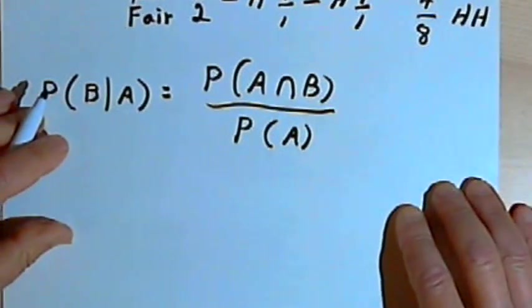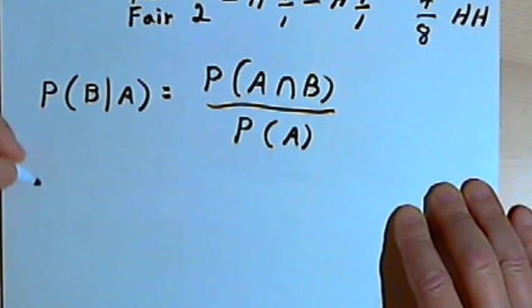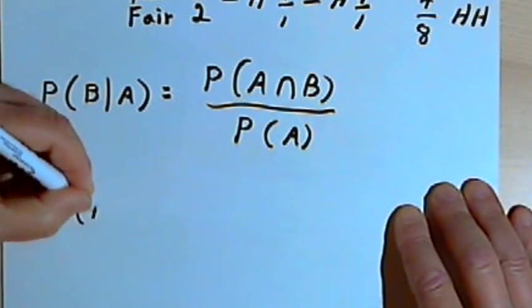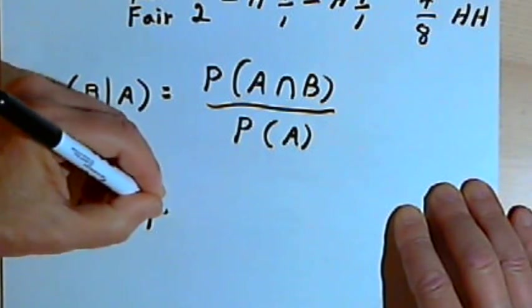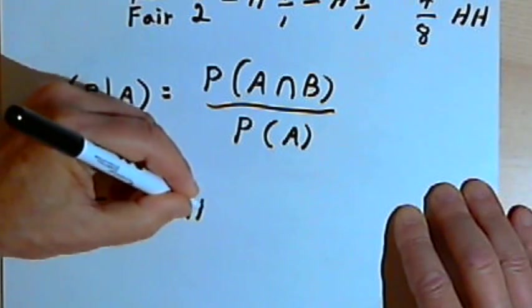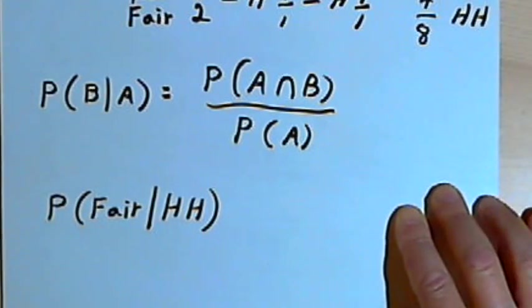Okay, and now let's turn this into the terminology we're using for this problem. So I want to know what's the probability that I have a fair coin, given that I already flipped it twice and got heads two times in a row.